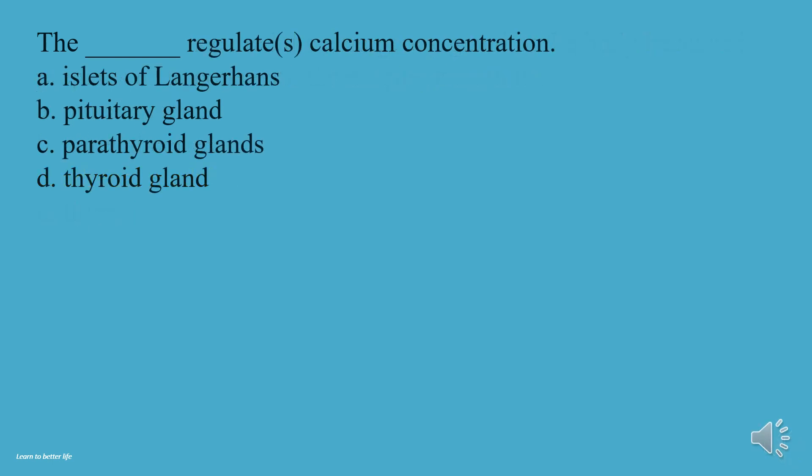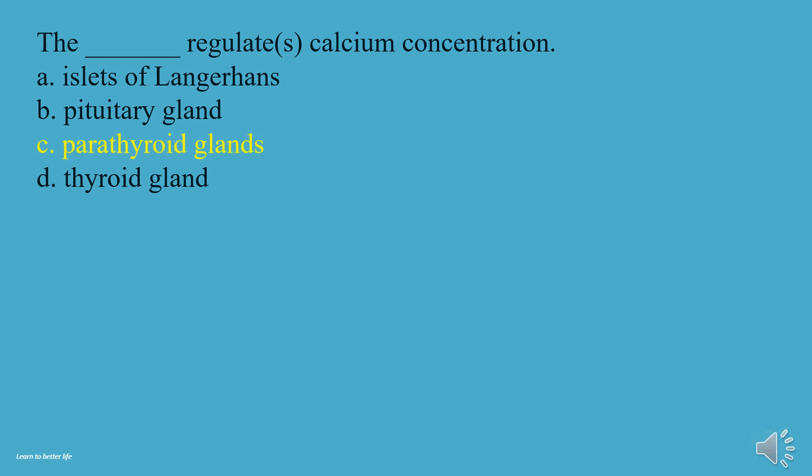What regulates calcium concentration? A, Islets of Langerhans. B, Pituitary gland. C, Parathyroid glands. D, Thyroid gland. The answer is C, Parathyroid glands.